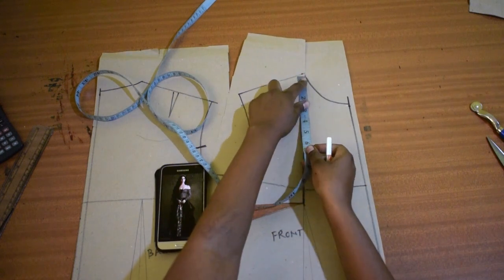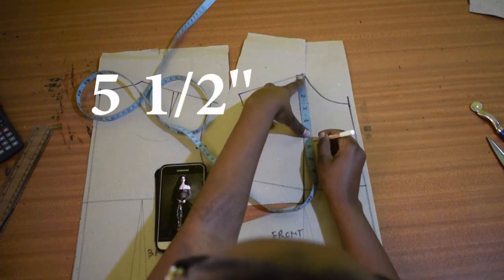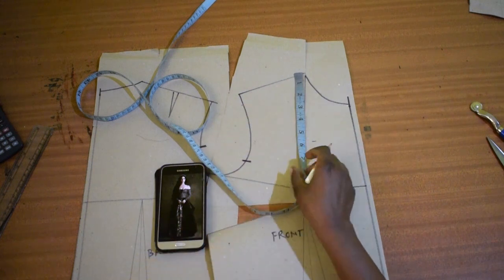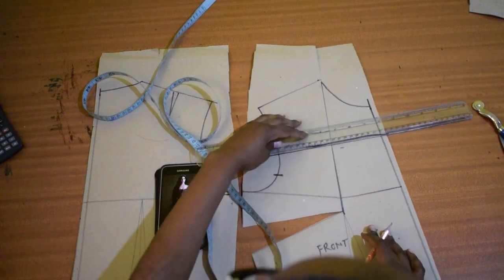From the shoulder go down 5.5 inches in a straight line. That's that. Make a straight line just to guide you.